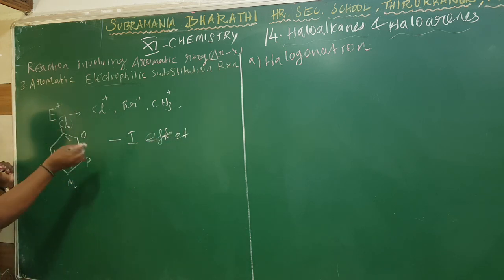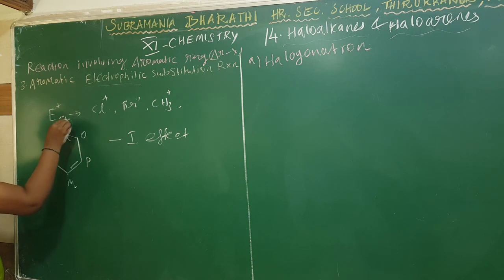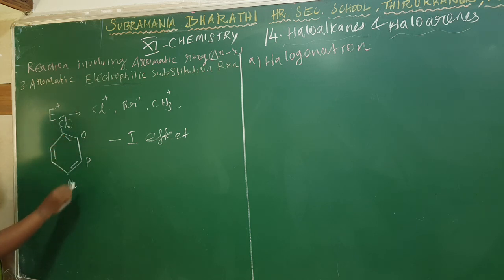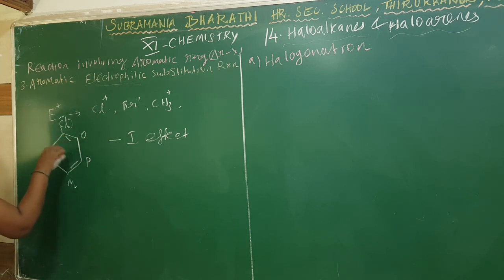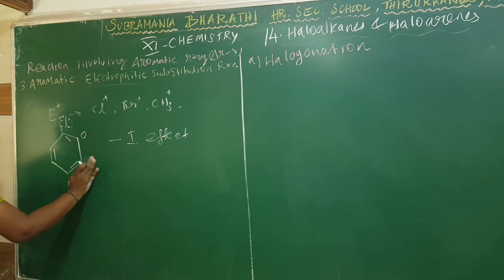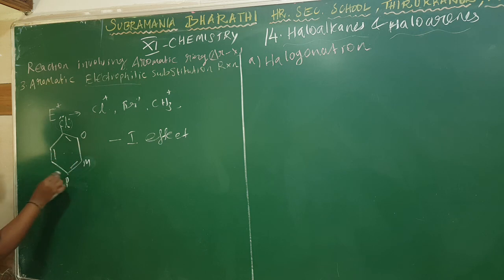The minus I effect: chlorine has three lone pairs of electrons. These three lone pairs are pulled toward the delocalized pi electrons. So your nucleus becomes fuller of electrons — you will donate. If you donate, you will get the ortho position. Ortho, meta, and para. Ortho and para positions have a negative charge.